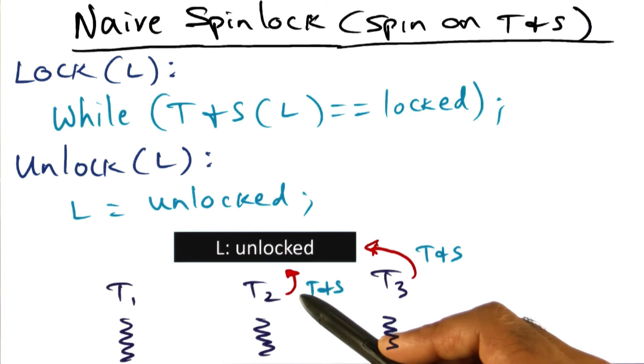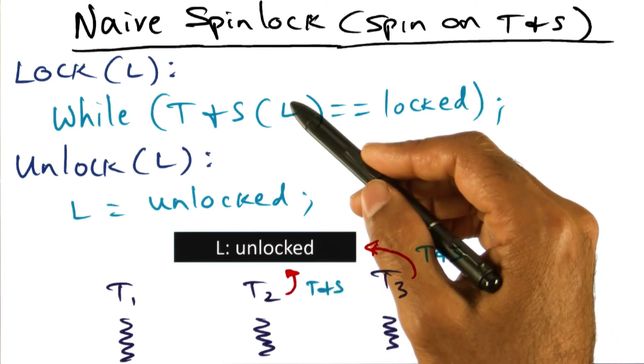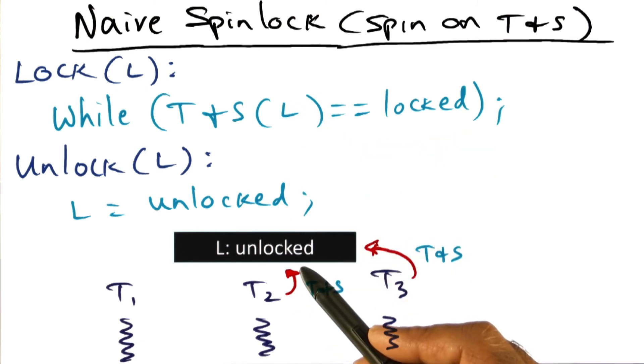When they try to do this test and set again, they're going to find at least one of them, hopefully exactly one of them, is going to find that the lock is unlocked and therefore they're going to get it.